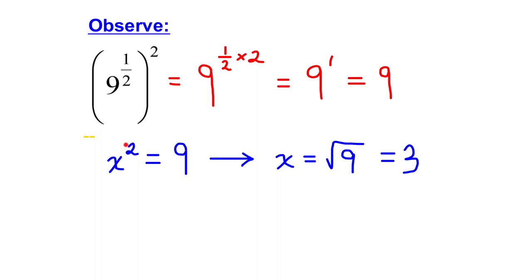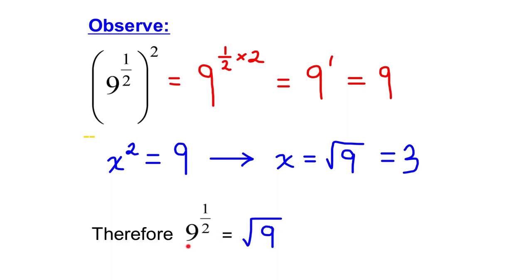Now, in the warm-up, I looked at this equation, x squared equals 9. To solve for x, I take the square root of 9, which is 3. So, if something squared is equal to 9, then that means that thing was equal to 3. Well, here I'm squaring something, and the answer is 9. So, that means this must also be equal to 3. So, the square root of 9 is equal to 3. 9 to the exponent 1 over 2 is also equal to 3. So, that means 9 to the exponent 1 over 2 is equal to the square root of 9.